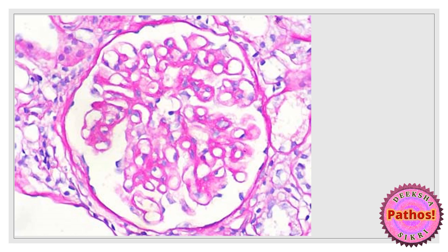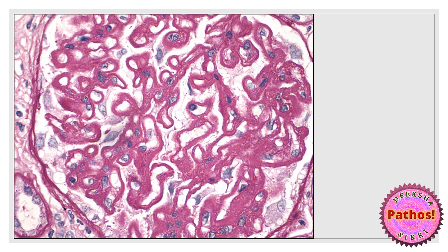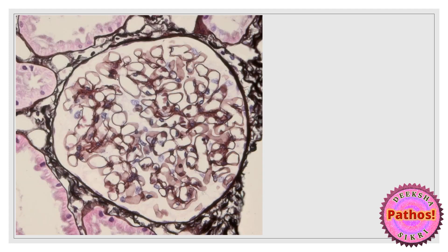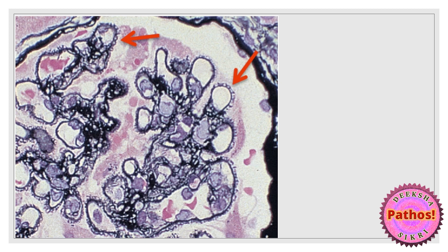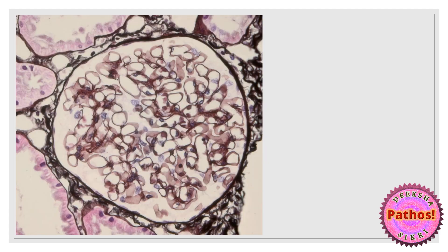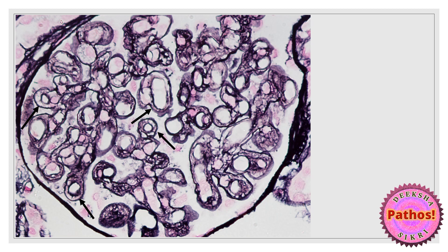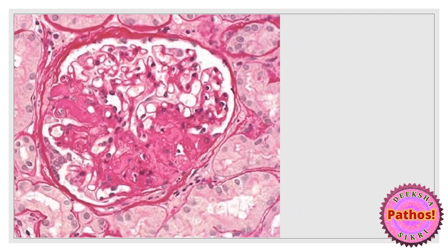Normal PAS stain, then look at this — it looks like someone took a thick pink sketch pen and highlighted the basement membrane all over. So this is a thick basement membrane on PAS stain. Silver stain normal, then look at this: the red arrows show something perpendicularly protruding from the capillary basement membrane. Then another abnormal: the arrows show the capillary basement membrane is not one but two — double basement membrane. Remember this photograph.